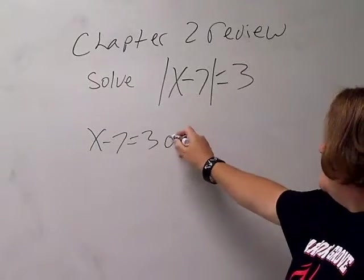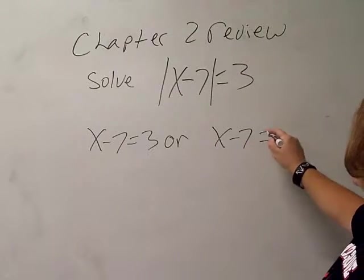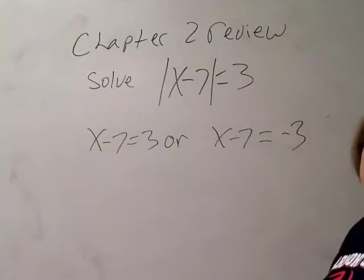Remember, when I get an equal sign, this is an or. I get my second equation by dropping my bars, making everything on the other side the opposite, so that's a negative 3 now.